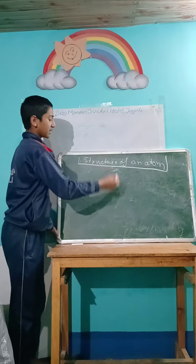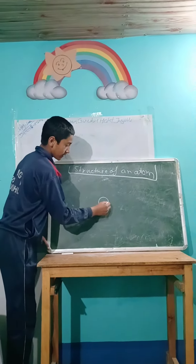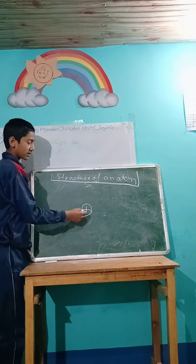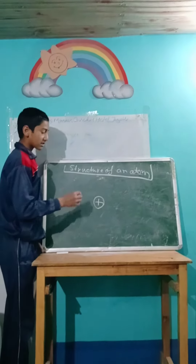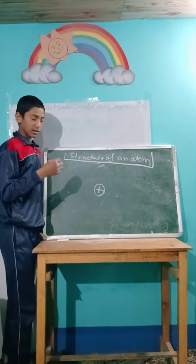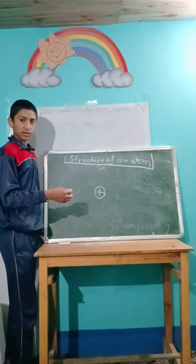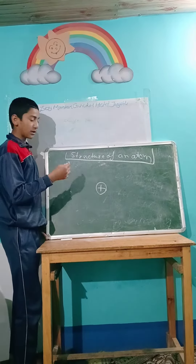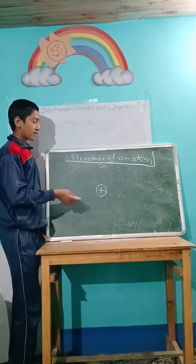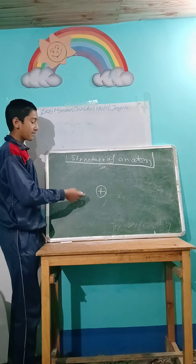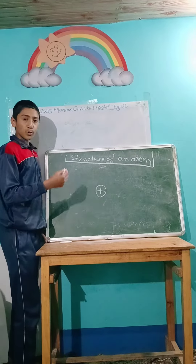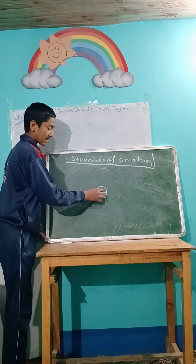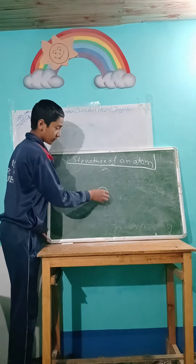Now I shall draw a structure of an atom. This is the nucleus. It has two types of particles: neutrons and protons. Neutrons have neutral charge, meaning they have no charge. Protons have positive charge, so the whole nucleus has positive charge.